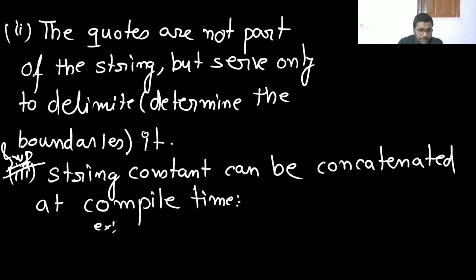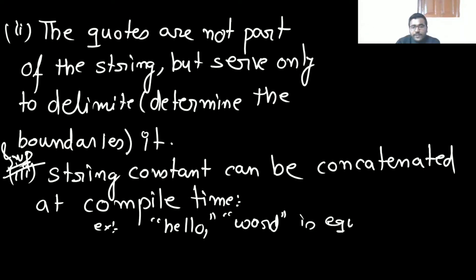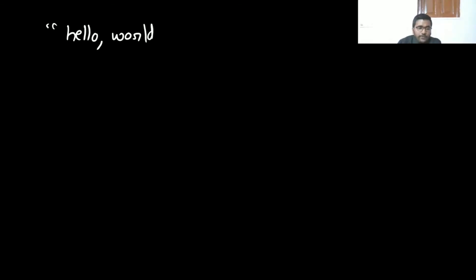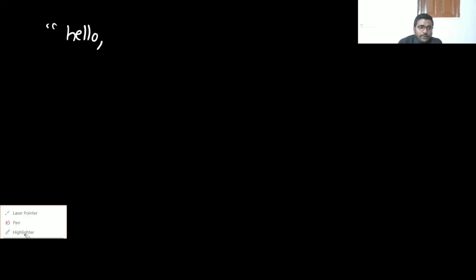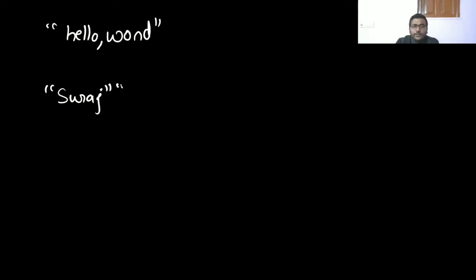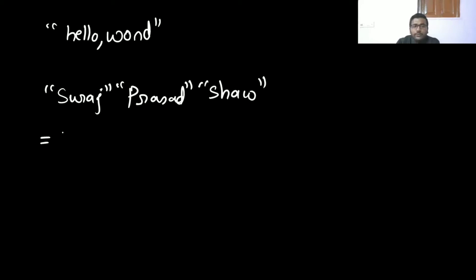For example, if you have "hello" and "world" written as two adjacent string constants, they are equivalent to "hello world". Note there is no space between them unless you include one. Similarly, writing "sur" and "aj" adjacent is equivalent to "suraj" — same string, no gap.